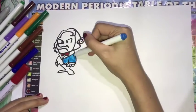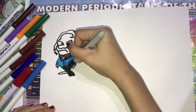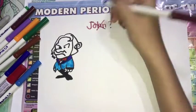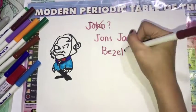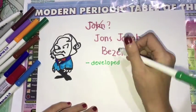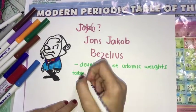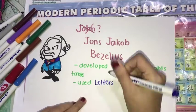Jan Ziacobelzelius is the one who developed the atomic weight table of an element. He also used some letters to symbolize elements.